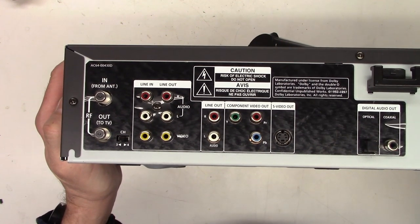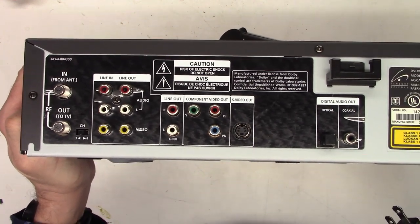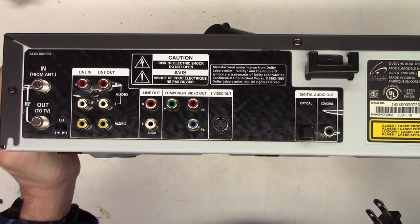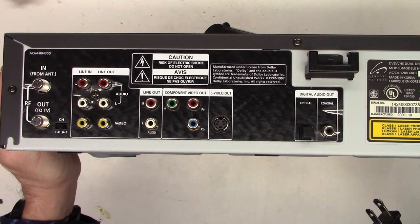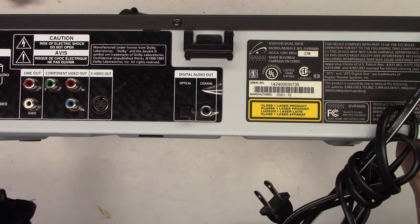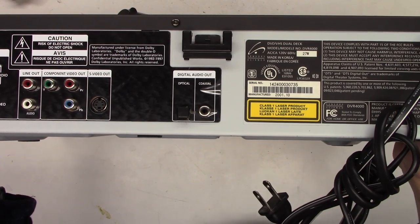So on the back of it I do have an analog in and an RF 3-4 channel output, line in, line out, as well as DVD only component video out, separated video out, and a line out audio. And I also have an optical digital audio output and a coaxial digital audio output.